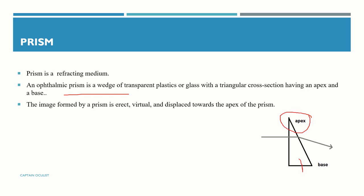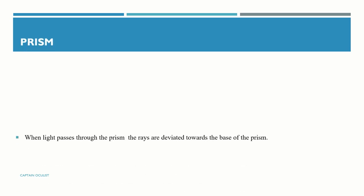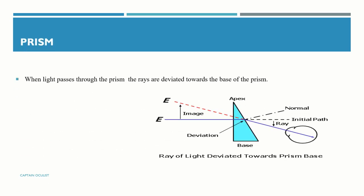The image formed by a prism is erect, virtual, and displaced towards the apex of the prism. However, light rays that pass through a prism bend towards the base of it.